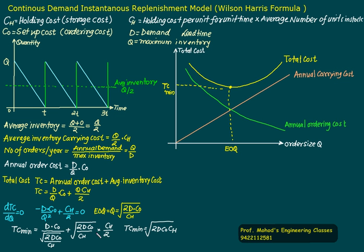Instead of Q, we will put square root of 2DCO upon CH, times CH by 2. If we solve this, we will get square root of 2 times demand times CO times CH. So total minimum cost is square root of 2 times demand times ordering cost times holding cost. Thank you.